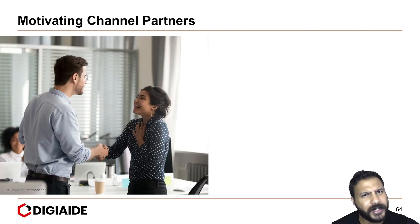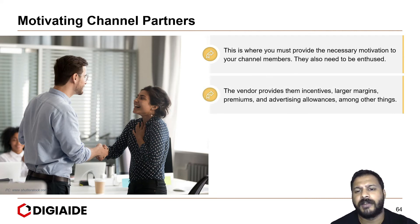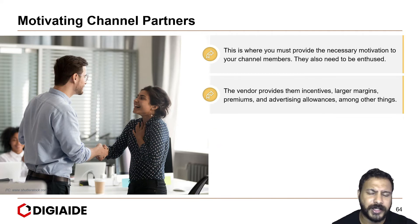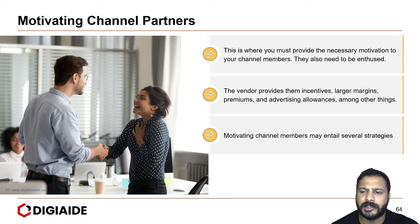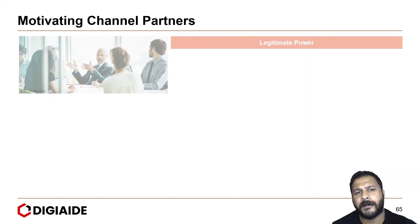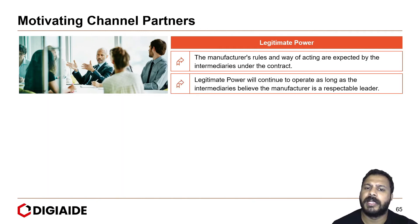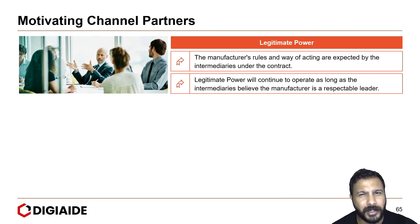Moving on to motivating channel partners. This is where you must provide the necessary motivation to your channel partners — they also need to be enthused. The vendor provides them incentives such as larger margins, premiums, and advertising allowances, among other things. Motivating channel partners may entail several strategies. A variety of strategic powers are required while interacting with channel members. First, legitimate power: the manufacturer's rules and ways of acting are expected by intermediaries under the contract. Legitimate power will continue to operate as long as the intermediaries believe the manufacturer is a respectable leader.